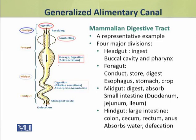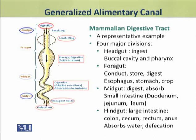The fourth division of the digestive tract is the hind gut, which comprises the large intestine. The large intestine has many components: colon, cecum, rectum, and anus, which collectively form the hind gut. The hind gut has two major functions: absorption of water and electrolytes, and defecation — that is, removal of undigested waste.